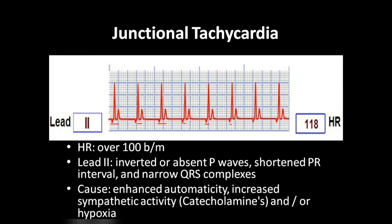The underlying mechanism is enhanced automaticity, where impulses reappear and overlap with atrial impulses very fast. The impulses are generated at the junction, causing the ventricular rhythm to appear faster. Causes include increased sympathetic activity or hypoxia. The key distinguishing factor is heart rate: Junctional Tachycardia is above 100 beats per minute, whereas Accelerated Junctional Rhythm is 60 to 100 beats per minute.